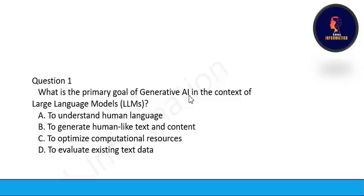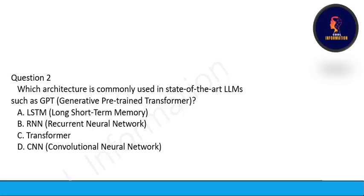First question: What is the primary goal of generative AI in the context of large language models? This is a very fundamental question. The primary goal of generative AI in the context of large language models is to generate human-like text and content. Option B is correct.